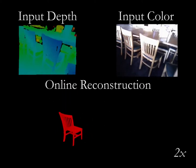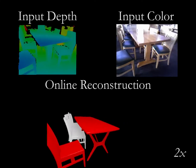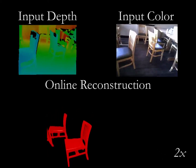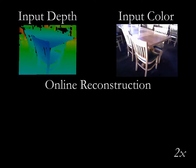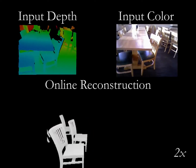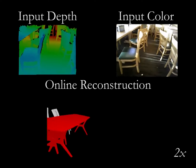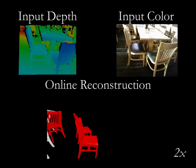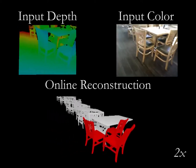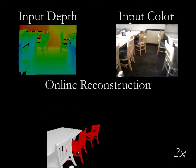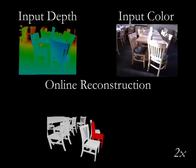Here we show a larger scene with many objects. The scene is scanned mostly from one side, resulting in very partial and cluttered data acquisition, yet our algorithm is still able to successfully reconstruct 40 chairs and 7 tables.